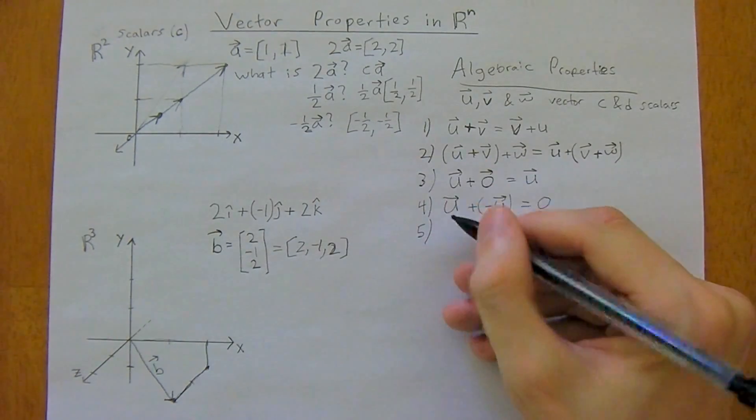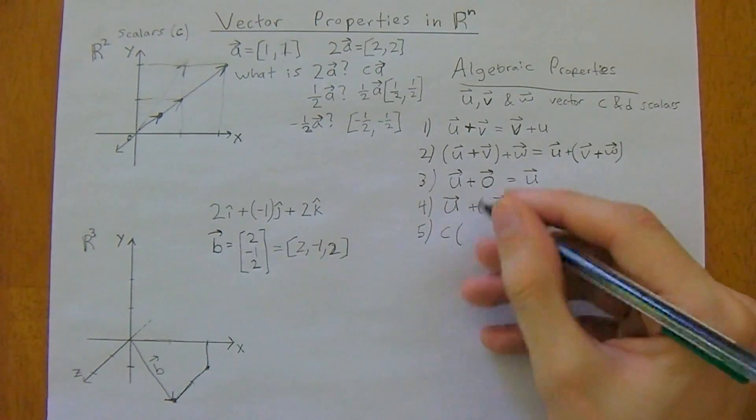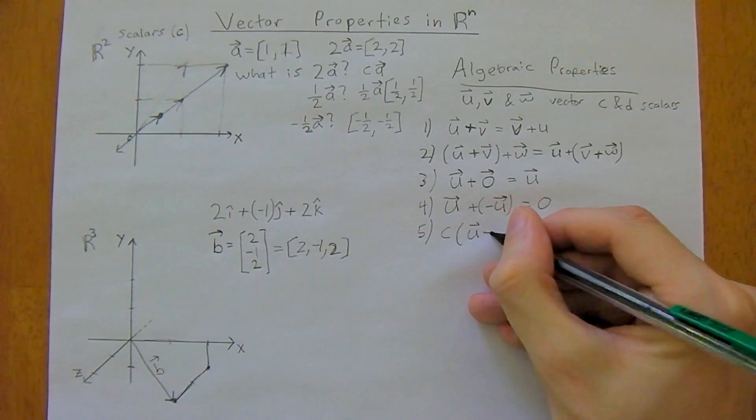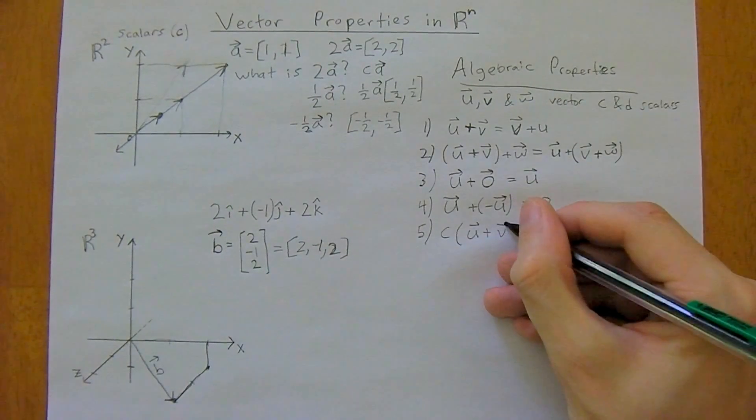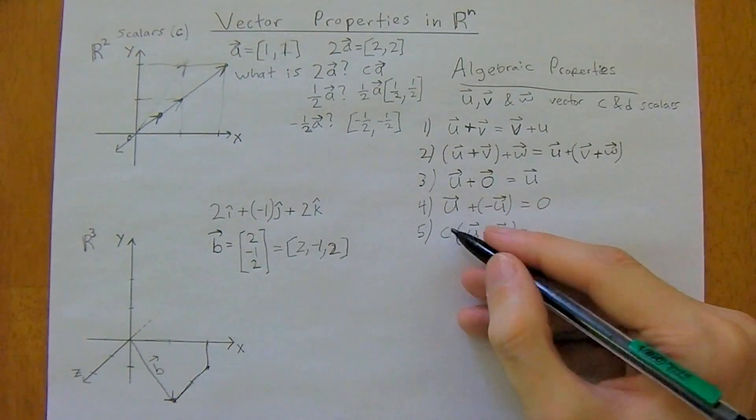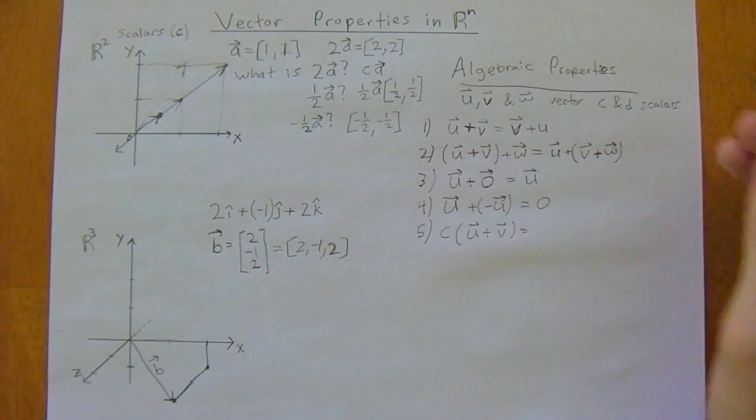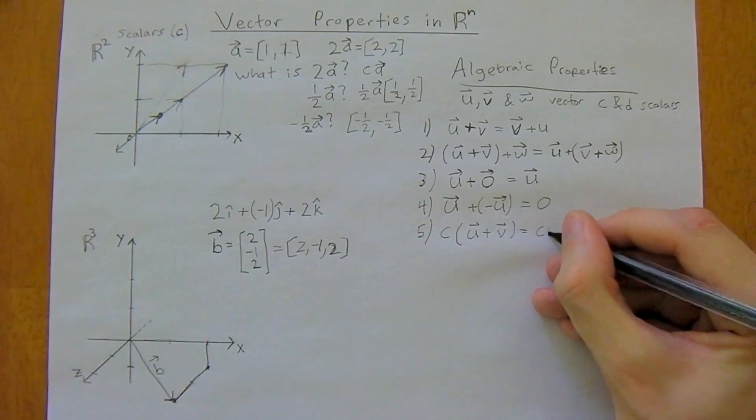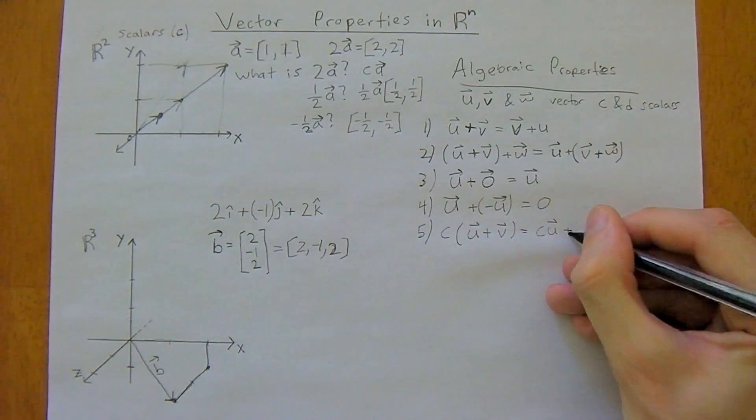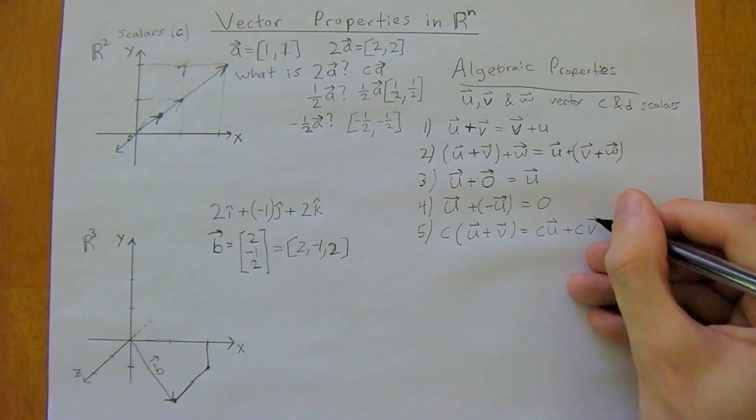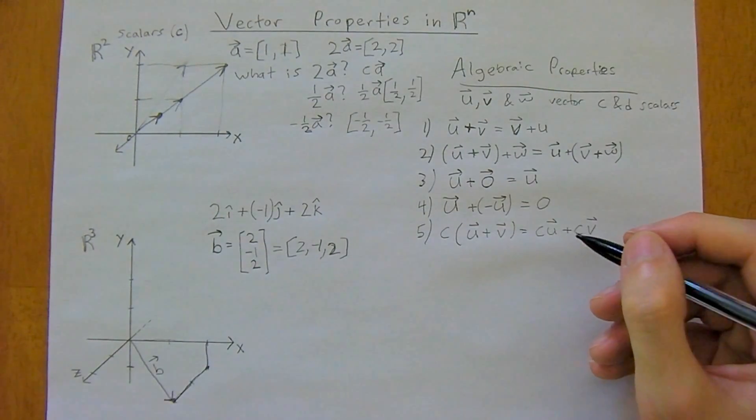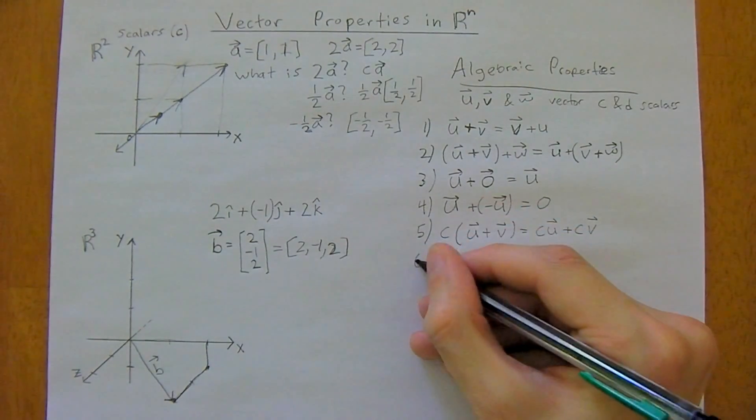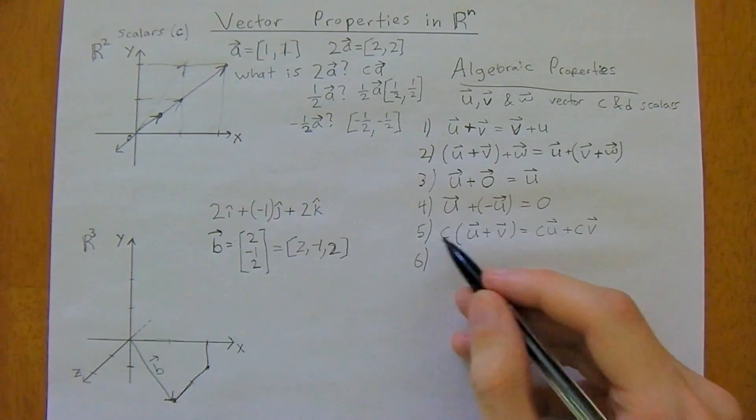And then we have, so we have a scalar c times vector u plus vector v, well this, you just distribute the scalar out, so it's going to be cu plus cv, and again, you know, just like regular algebra, distribute out the scalar.